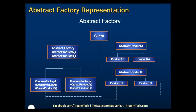Looking at the illustrated diagram of abstract factory: the client is a class which uses abstract factory and abstract product interfaces to create a family of related objects. Abstract factory is an interface used to create abstract products. Concrete factory is a class which implements the abstract factory interface to create concrete products. Abstract product is an interface which declares a type of product. Concrete product is a class which implements the abstract product interface.